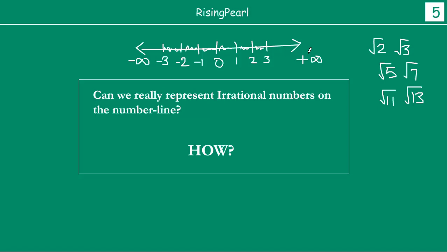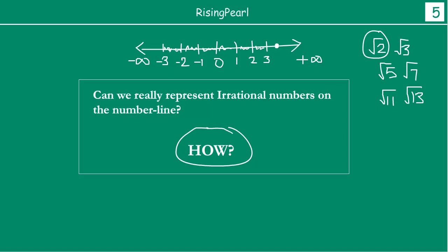We have noticed that every point on the number line represents a unique real number, whether that number is rational or irrational. Similarly, if we take any real number, we can uniquely represent it as a point on the number line. So the question is: how can we represent irrational numbers on the number line? Stay tuned for our next webisode.